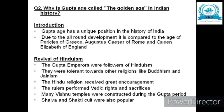The first subheading is Revival of Hinduism. The Gupta Emperors were followers of Hinduism, but they were tolerant towards other religions like Buddhism and Jainism. The Hindu religion received great encouragement during this period. The rulers performed Vedic rites and sacrifices like Ashwamedha and Rajasuya. Many Vishnu temples were constructed during the Gupta period, and the Shaiva and Shakti cults were also popular.